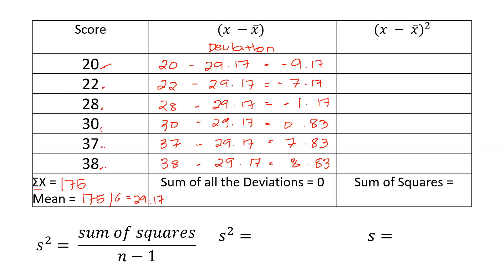One characteristic of the mean is that if you add all the deviations, you're going to get 0. That's one of the characteristics of the mean. Since we're concerned here with the standard deviation — which is basically the average distance of the scores from the mean — the reason we reach 0 is that the negatives cancel out the positives, which is why the sum of all deviations equals 0.